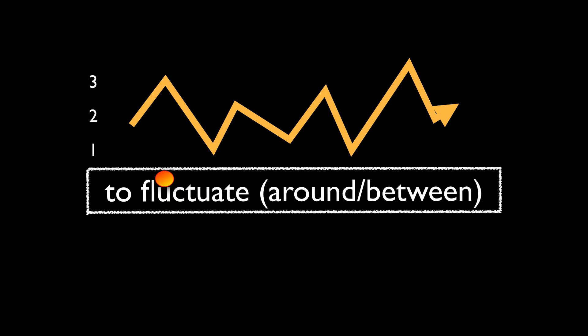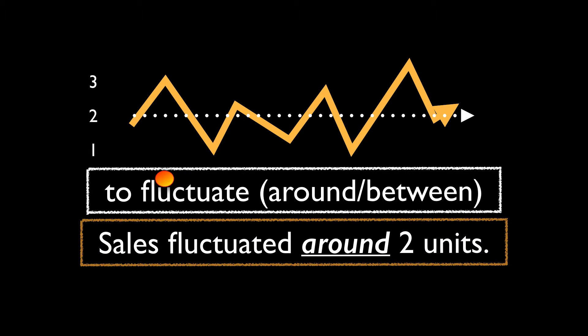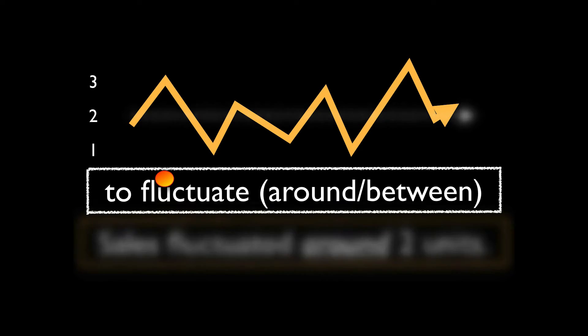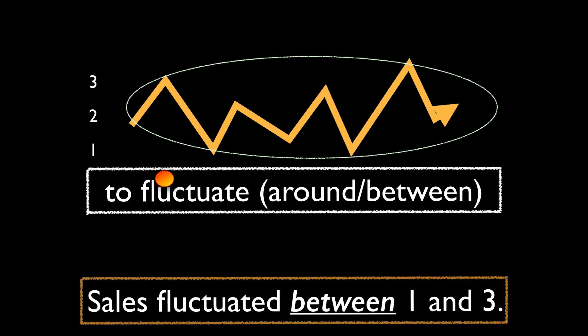To fluctuate. We either say 'to fluctuate around' if we're imagining a middle point, or 'to fluctuate between' where we're thinking of the range, so roughly from top to bottom. So: sales fluctuated around two units. In comparison, sales fluctuated between one and three units.